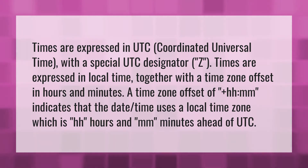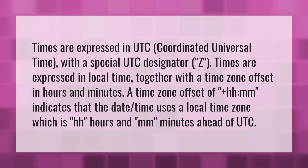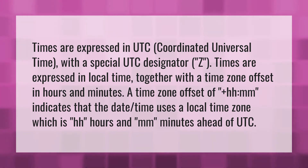Times are expressed in local time, together with a time zone offset in hours and minutes. A time zone offset of plus HH:MM indicates that the date time uses a local time zone which is HH hours and MM minutes ahead of UTC.